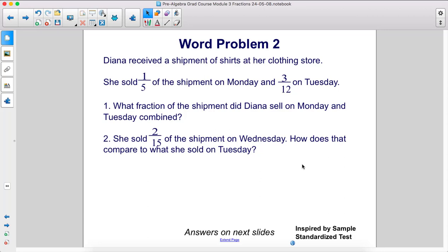Diana received a shipment of shirts at her clothing store. She sold one-fifth of the shipment on Monday and three-twelfths on Tuesday. What fraction of the shipment did Diana sell on Monday and Tuesday combined?